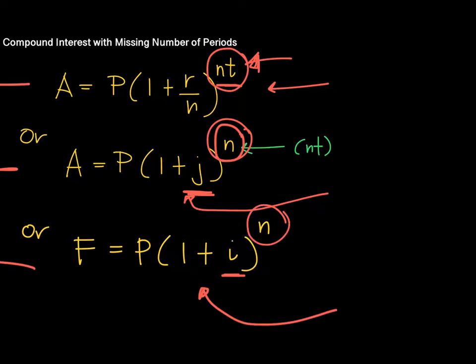In the version of NT, note that T is the time in years. So, if a compound interest is compounded, say, monthly, that means the number of periods is 12 times the number of years.